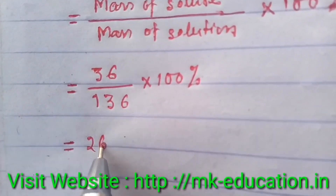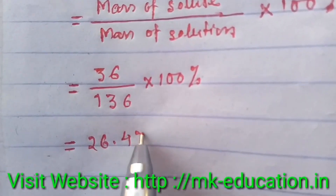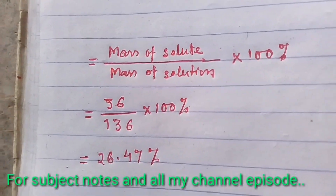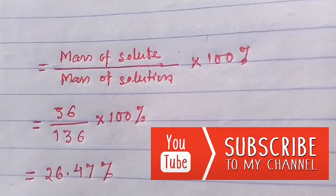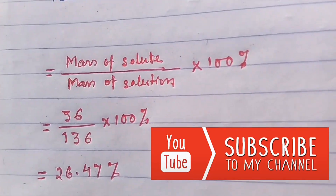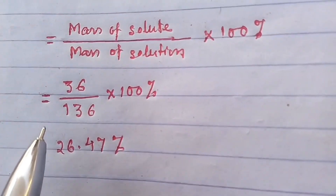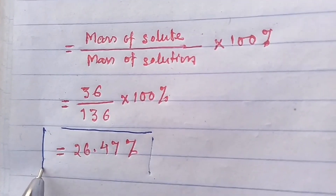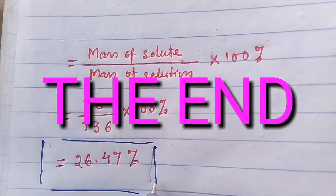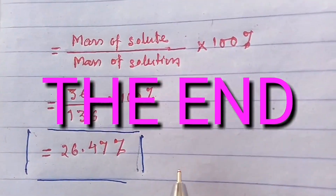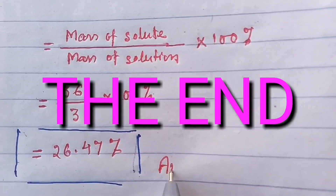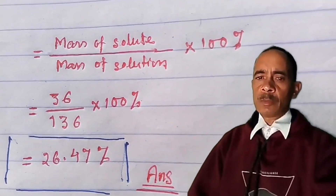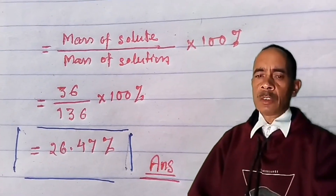After calculating, it will be equal to 26.47%. This is our answer. If you like my video, please like and share with your friends, and subscribe to my channel for the latest upcoming episodes. For more questions, I will continue on the next episode. Thanks for watching. Please press the bell icon to stay updated.